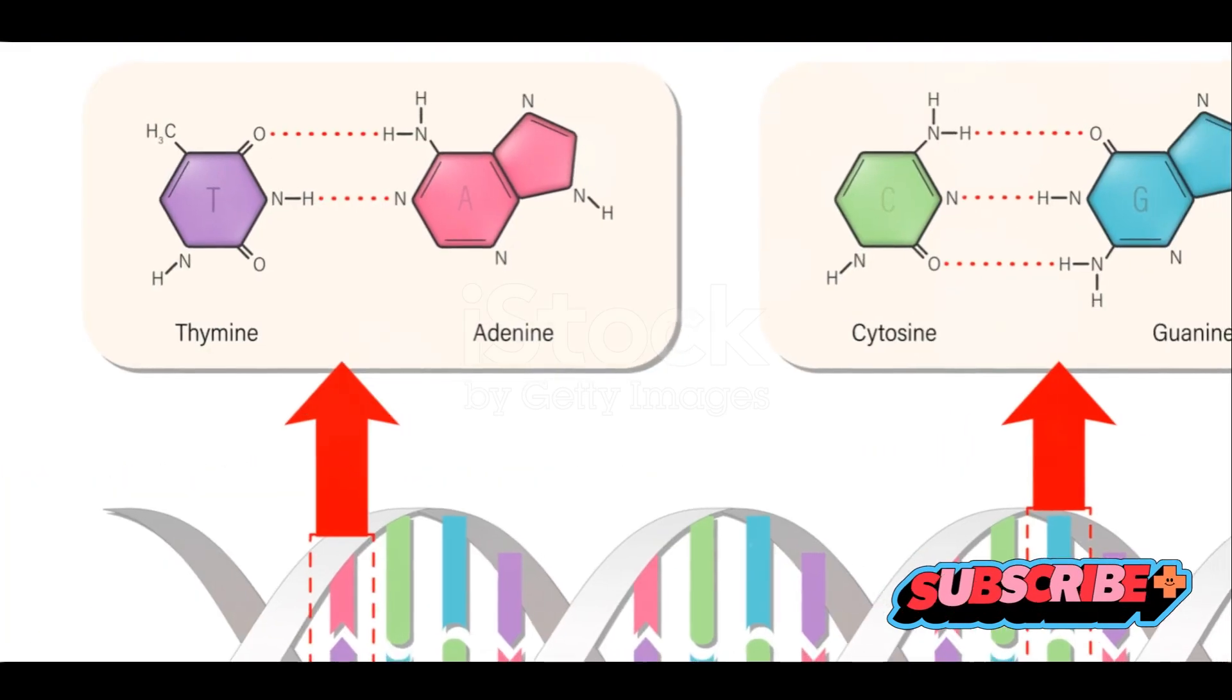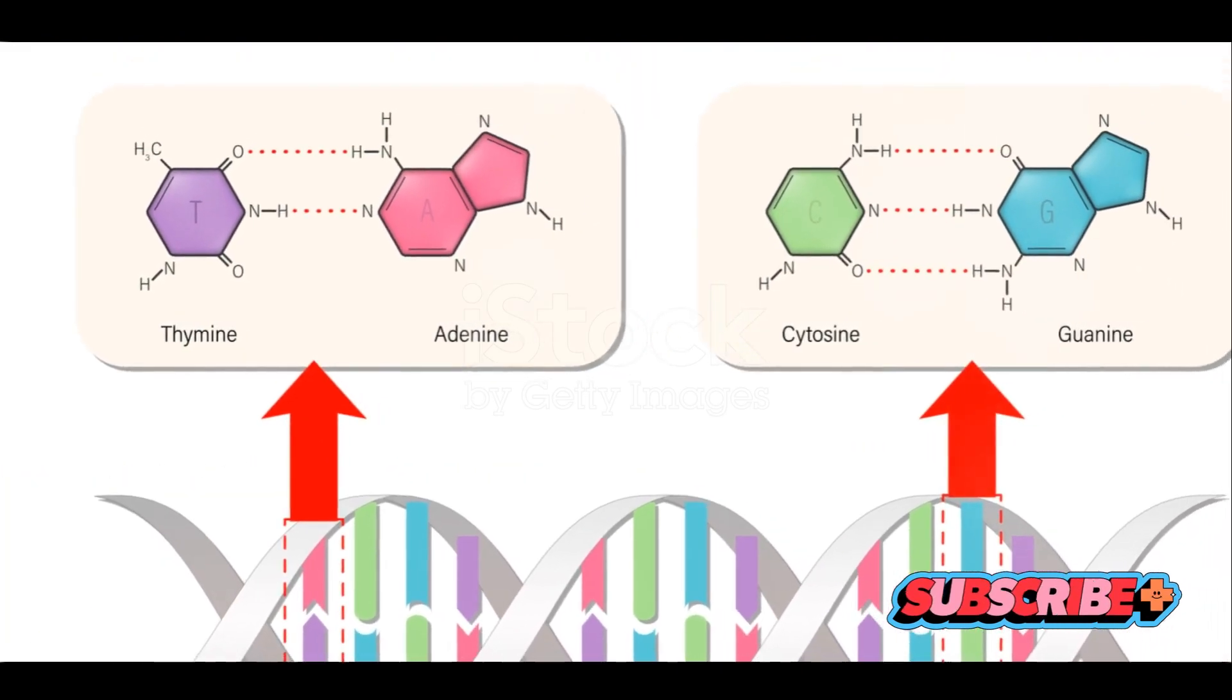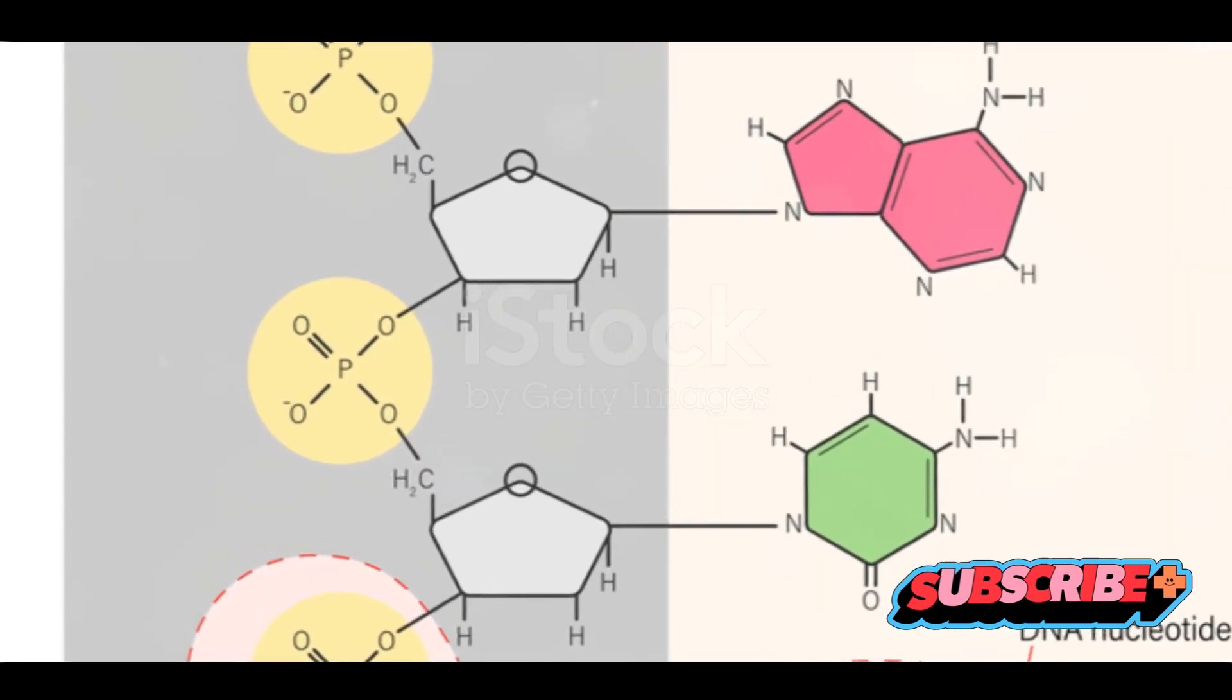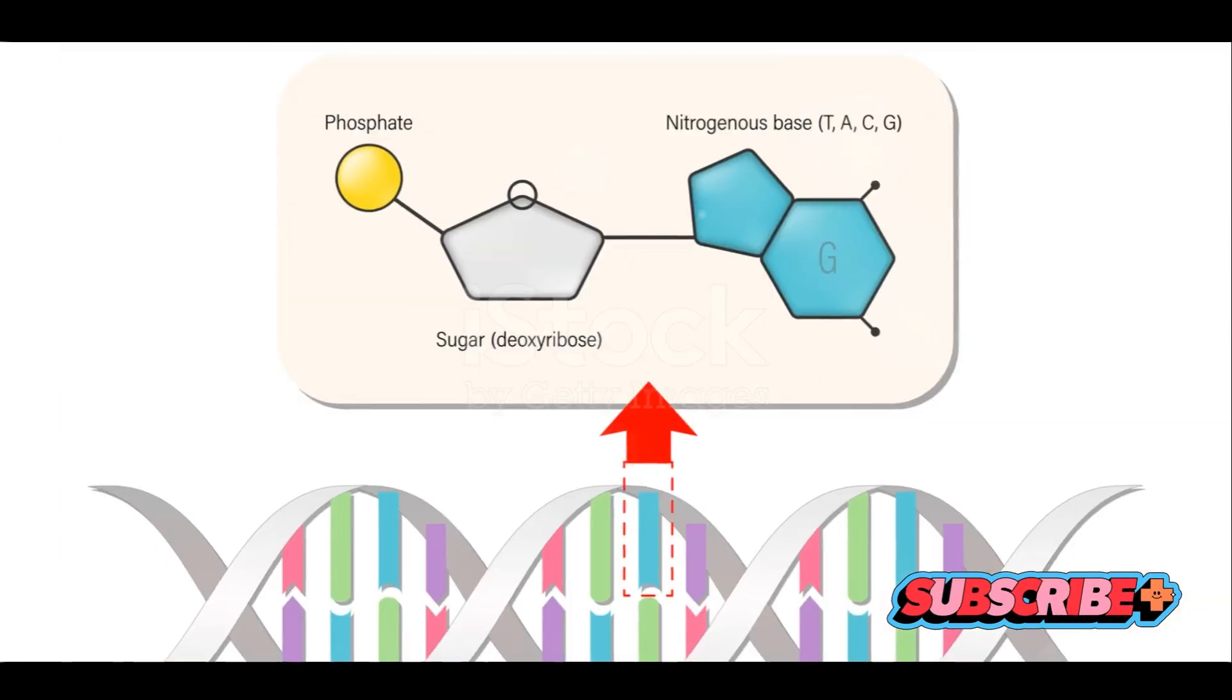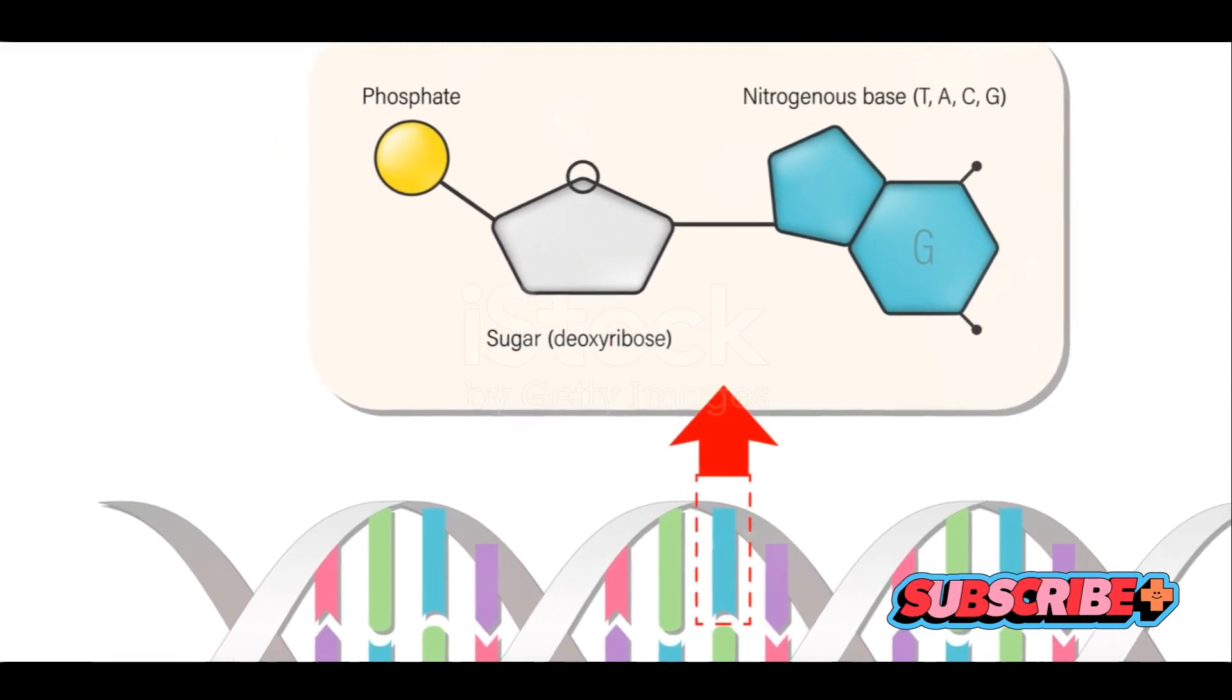Each rung is made of a pair of molecules called nucleotides. A nucleotide is composed of three parts: a sugar molecule, a phosphate group, and a nitrogenous base.